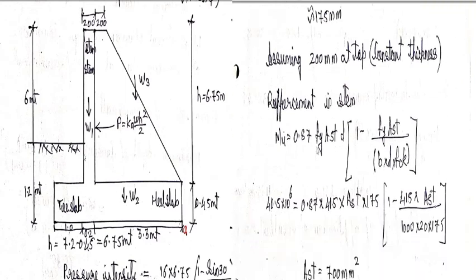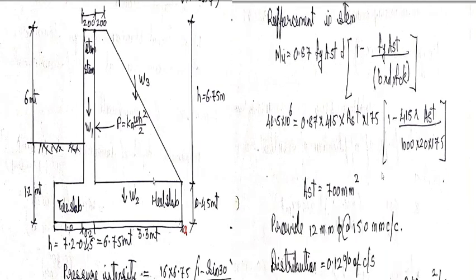Now assuming again 200 mm at a top constant thickness. So reinforcement in stem. So this is the formula: M is equal to 0.87 FY AST D 1 minus FY AST divided by BD FCK. So substituting we get AST is equal to 700 mm square.